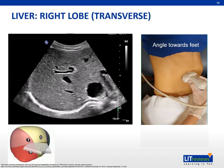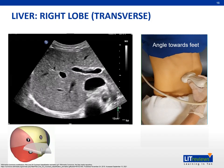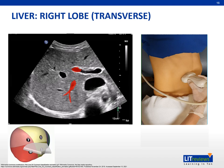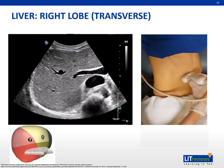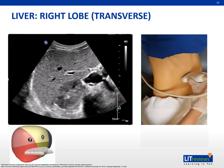With caudal angulation, the right portal vein with its anterior and posterior branches will come into view. At this level, parts of the middle and right hepatic veins can still be visualized, allowing us to identify segments 8 and 5, which are supplied by the anterior branch, and segments 7 and 6, which are supplied by the posterior branch. More inferiorly, at the level of the right kidney, we are looking at segment 6 posteriorly and segment 5 anteriorly.